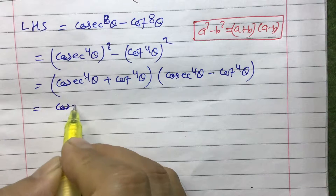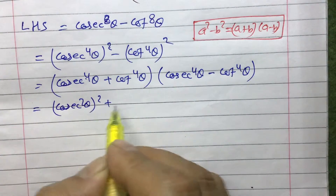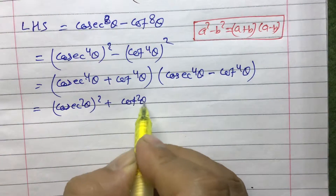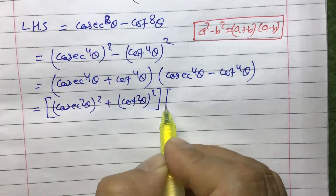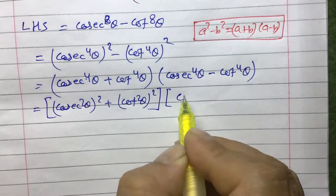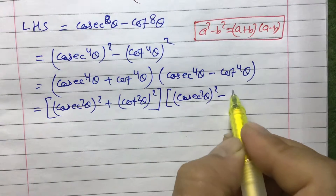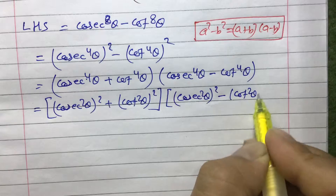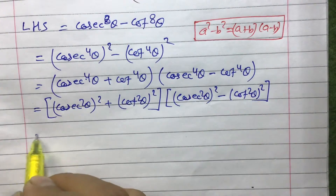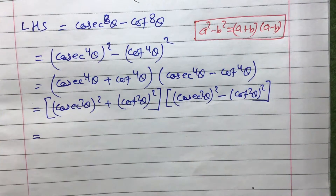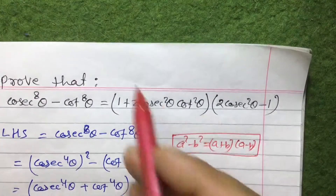The first factor becomes (cosec²θ)² + (cot²θ)², which is a² + b² form. The second factor becomes (cosec²θ)² - (cot²θ)², which is again a² - b² form. Now we have an a² + b² expression in the first factor.